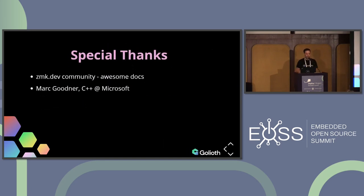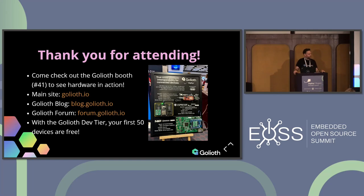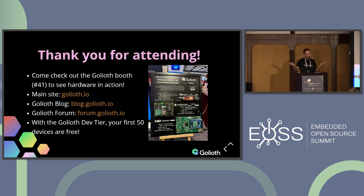Quick thanks — there's a great project called ZMK, probably one of the largest open source projects built around Zephyr. Their documentation is great, their samples are great, and that's where I got a lot of tips on how to use VS Code more effectively. Also thanks to Mark Guttner at Microsoft who helped debug some of my samples. And really quick about Goliath one more time: if you're interested, we're over here in the booth. We write a lot about Zephyr on our blog — a ton of content about development and how to build different developer experiences. You can find me later or find me on the internet. And with that, thank you.